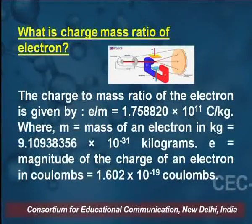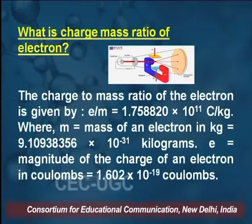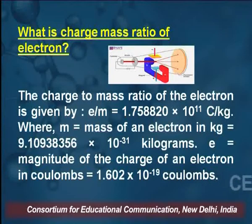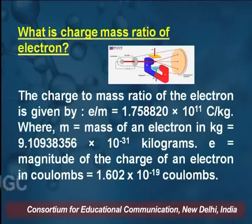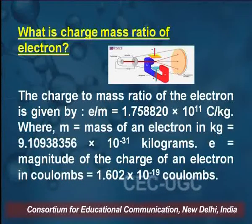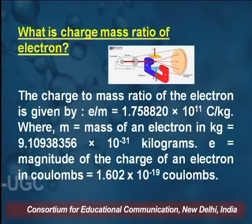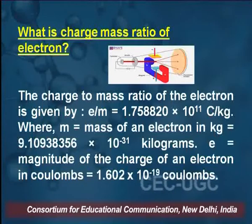The charge-to-mass ratio of the electron is 1.7 × 10¹¹ coulombs per kilogram, where the mass of the electron is 9.1 × 10⁻³¹ kilogram and the electron charge e is 1.6 × 10⁻¹⁹ coulombs. This value has been calculated experimentally as well as graphically.